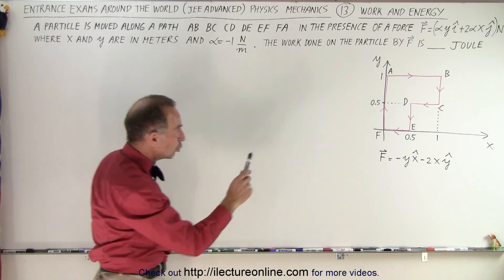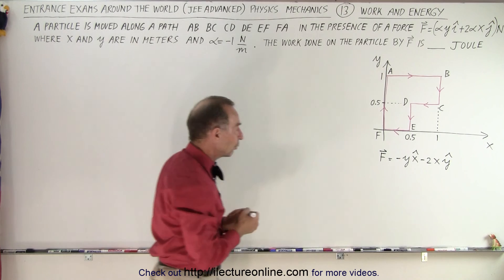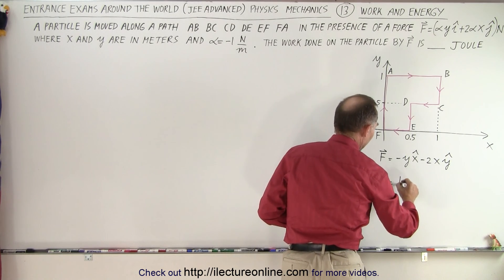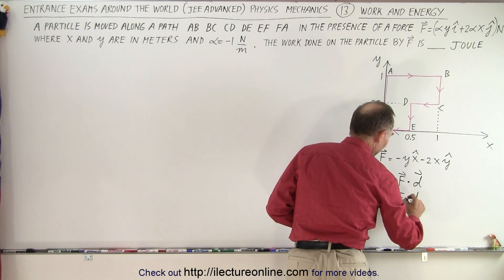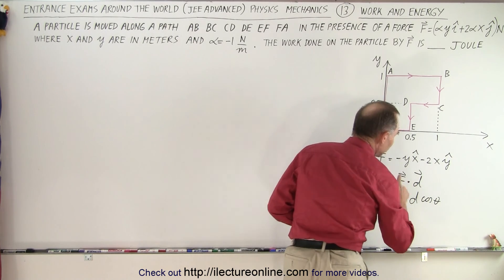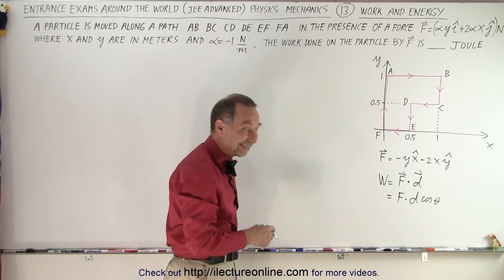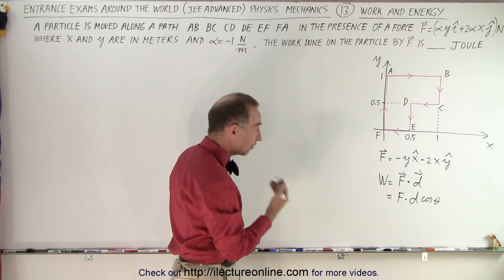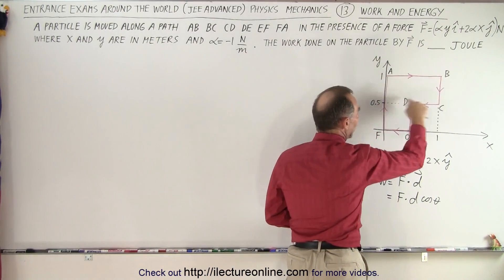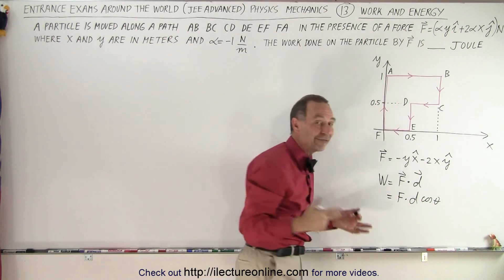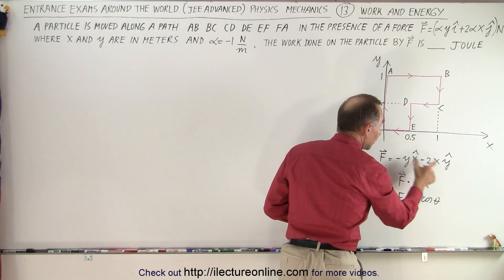We have 6 paths, so we're going to calculate the work done 6 times. Remember that the work done is the product of the force and the displacement — force times displacement times the cosine of the angle. Force and displacement are vectors, so the sign is important: travel in a negative direction is a negative displacement, positive direction is a positive displacement. All travel is either in the X or Y direction, so only one of the two components will be effective in calculating the work.